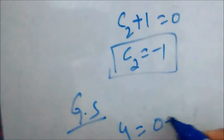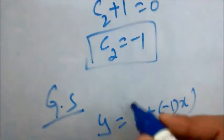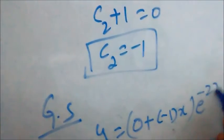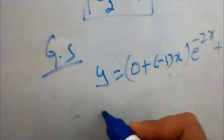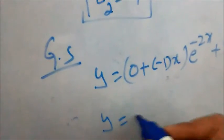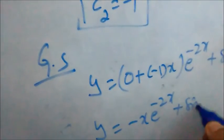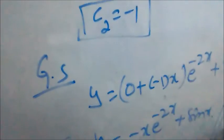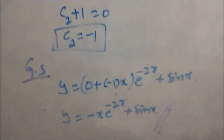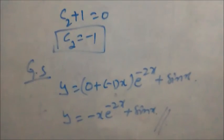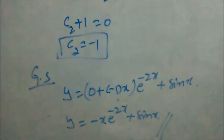Substituting c1 = 0 and c2 = -1 in the general solution: y = (0 + (-1)x)·e^(-2x) + sin(x), which gives y = -x·e^(-2x) + sin(x). This is the required solution. If you have any doubts, ask in a comment. If you got the procedure clearly, like it and subscribe. Thank you.